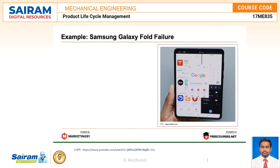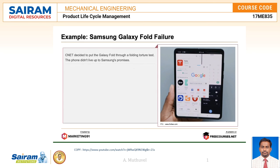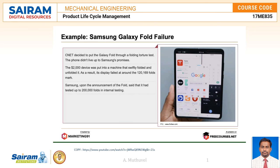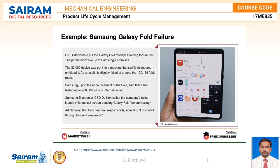An example highlighting the importance of test marketing is the Samsung Galaxy Fold failure. The phone failed a folding torture test — the display failed at around 120,169 folds, even though Samsung claimed it had tested up to 200,000 folds internally. Samsung Electronics CEO DJ Koh called the failed launch of the Galaxy Fold embarrassing and personally admitted: 'I pushed it through before it was ready.'